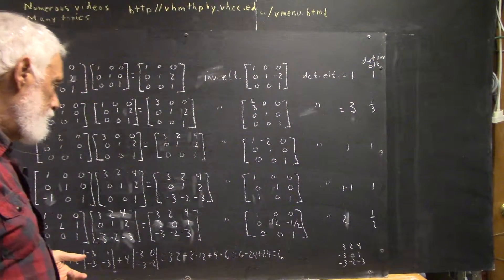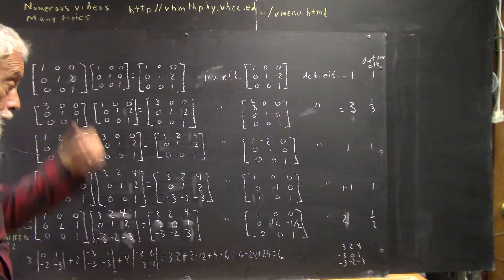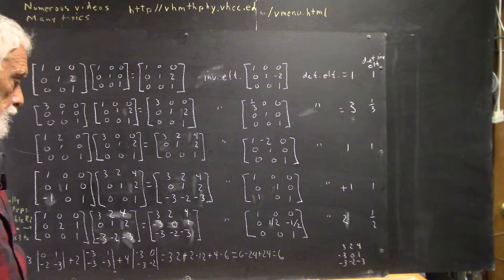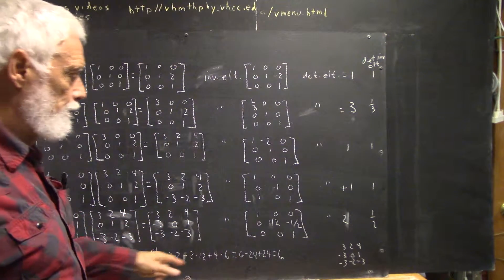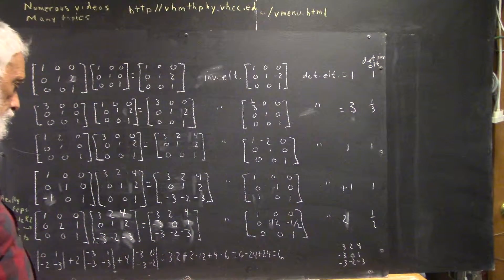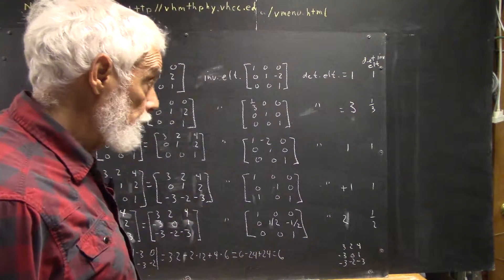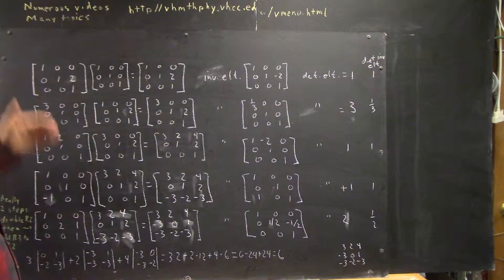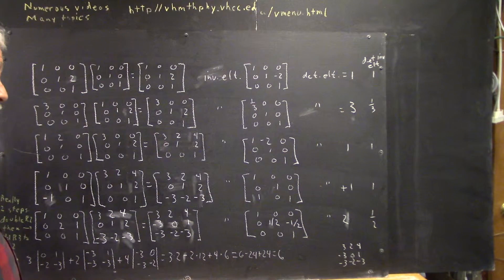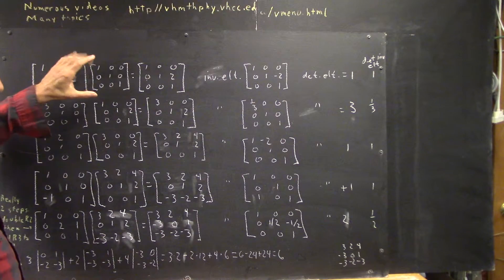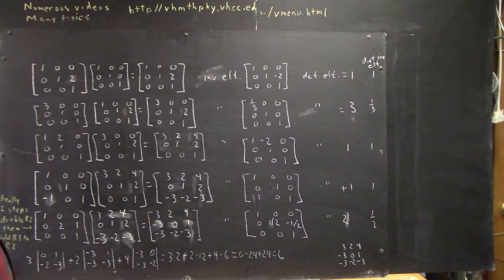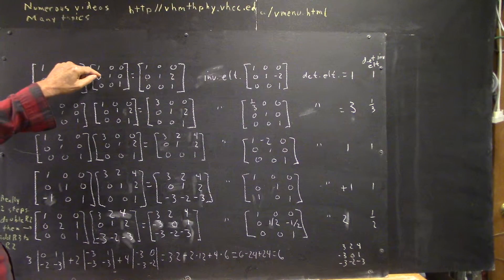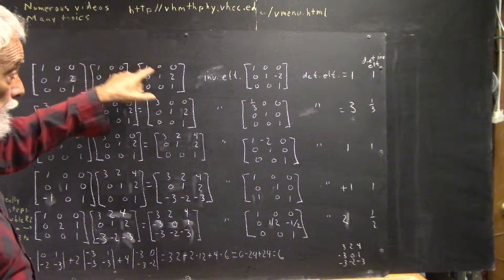The matrix that we get at the end — I didn't get this right the first time; I copied down one wrong number and screwed up everything, so you've got to be careful when you're doing this. It's a big clerical task. The determinant of this final matrix is easily calculated by minors, and we do get determinant 6. The determinant of the identity matrix is 1. Determinant of this is 1, determinant of this is 1, so the determinant of this should be 1, and we verify that it is.